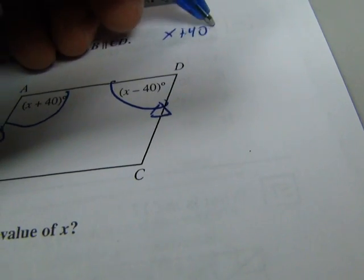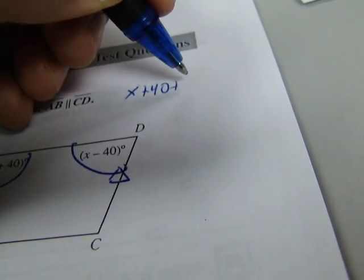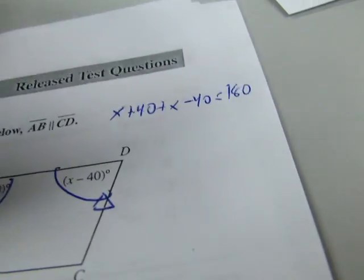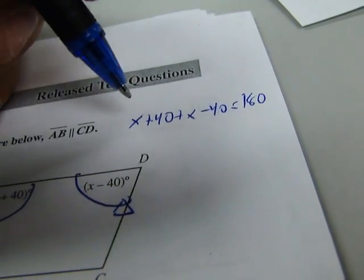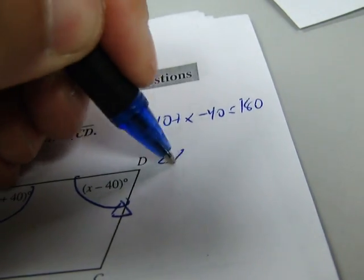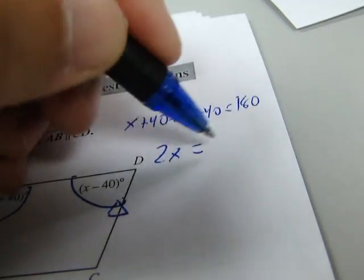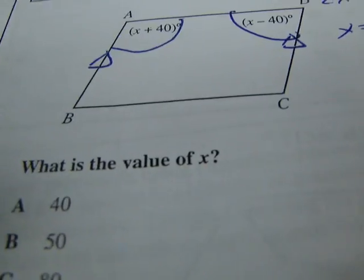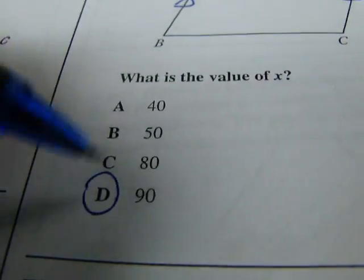X plus 40 plus X minus 40 equals 180. So we combine like terms. We get 2X. The 40s cancel out. We get 2X equals 180. Therefore, X equals 90. So we're trying to find the value of X. Well, we did it. It's 90.